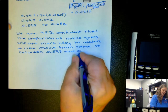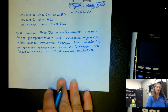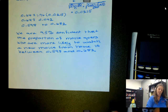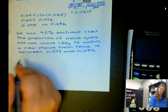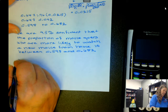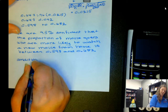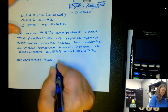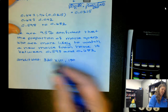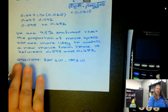One thing we did not do but should always do before these problems is check the conditions. We verify that the number of successes, 320, is greater than or equal to 10, and that the number of failures, 500 minus 320 which is 180, is also greater than or equal to 10. Both conditions are satisfied.